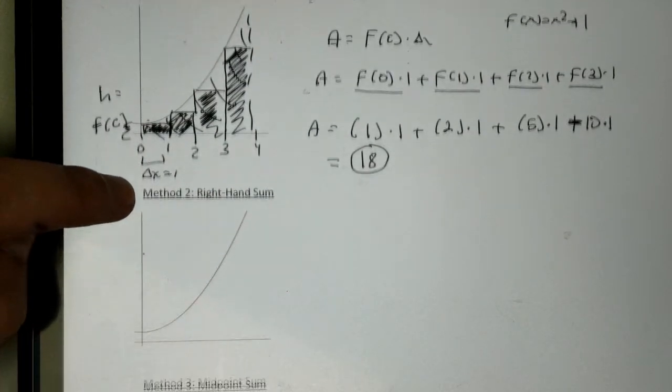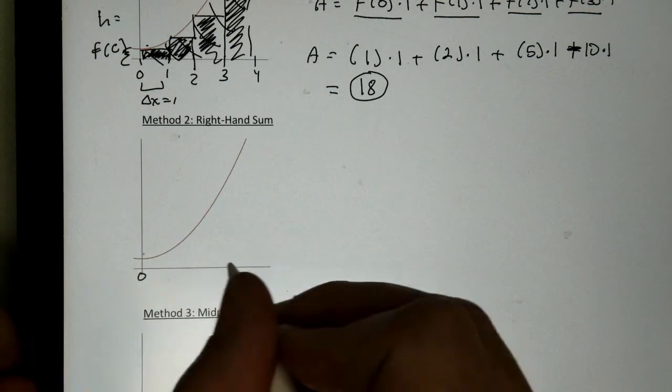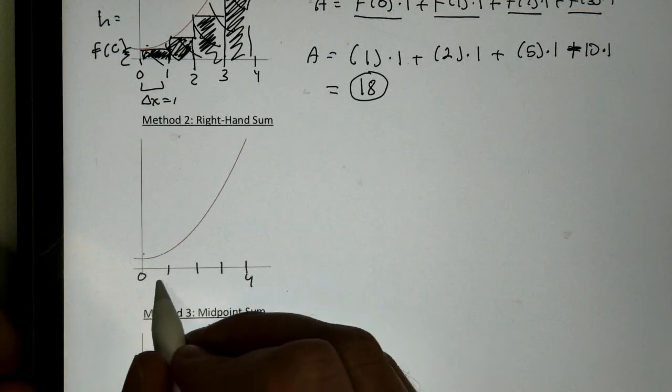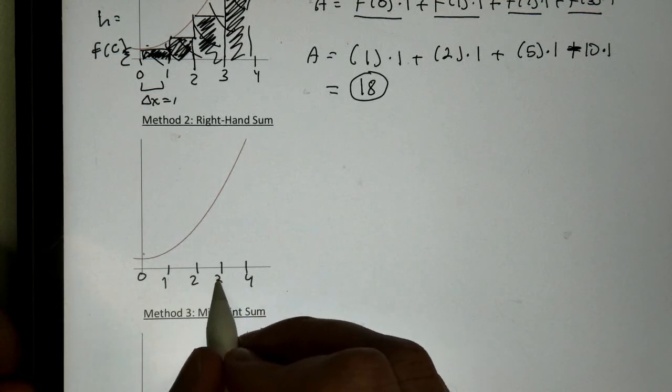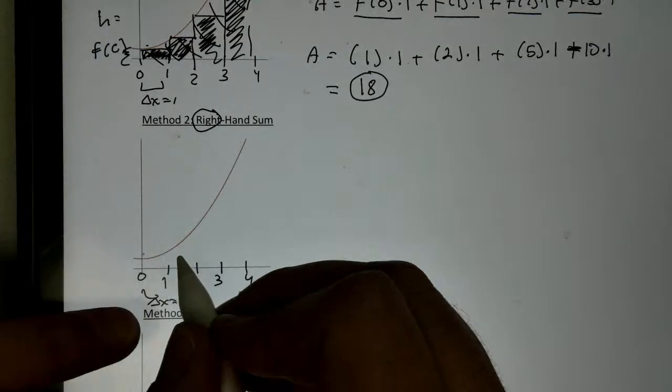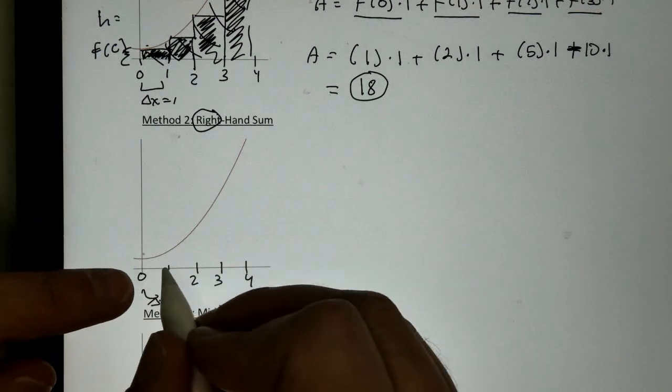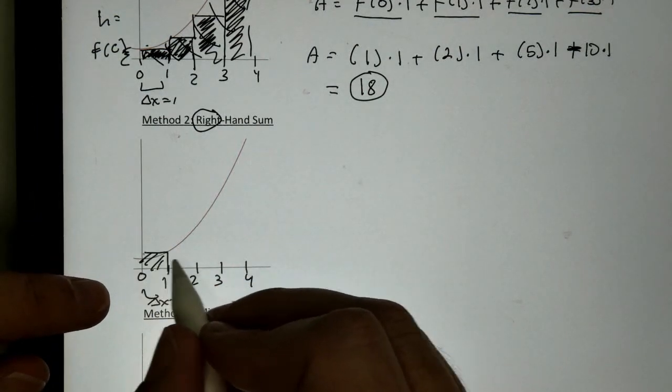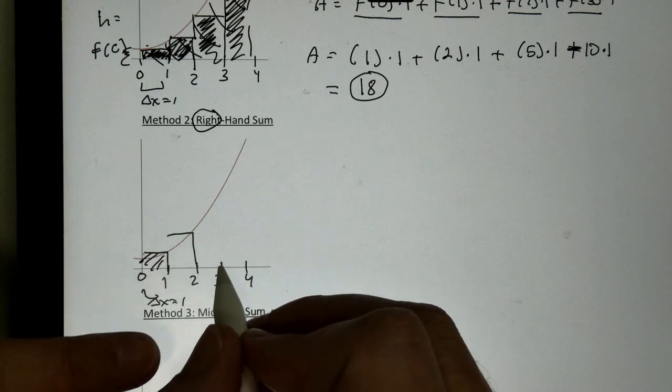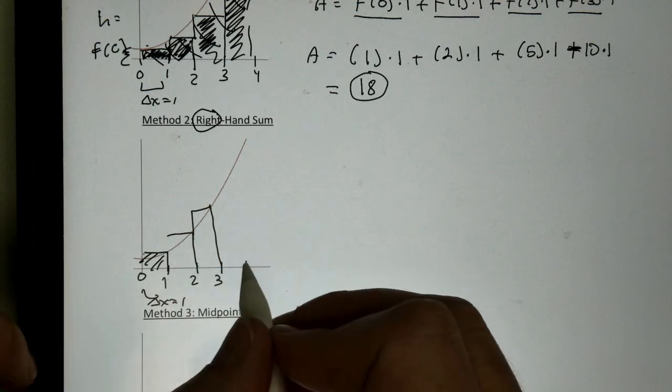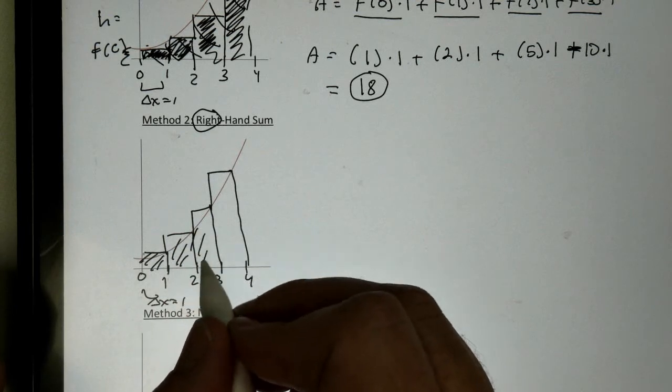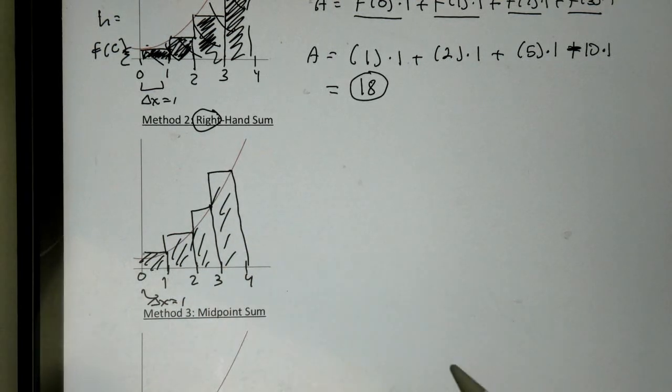But now let's take a look at a right-hand sum. A right-hand sum is the same thing. Going from 0 to 4, we want to estimate the area. So, we're going to break it up into widths of 1, again, just like we did before. There's my delta x. It's still 1. But now I want to pick the right number. So, between 0 and 1, 1's on the right. So, now I'm going to make my rectangle on the right side. Between 1 and 2, 2 is on the right side. Between 2 and 3, 3 is on the right side. Between 3 and 4, 4 is on the right side. And if you notice here, this is now going to give me actually an overestimate.